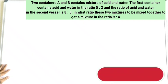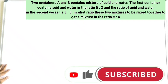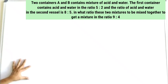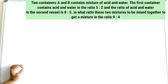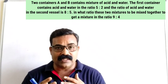Two containers A and B contain a mixture of water and acid. The ratio of acid to water in the first vessel is 5:2 and in the second vessel is 8:5. In what ratio should these mixtures be mixed together so that the ratio of acid to water in the new mixture becomes 9:4?